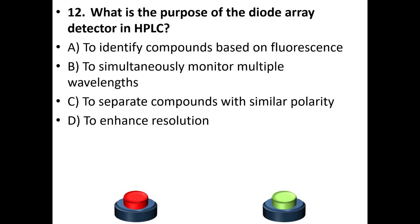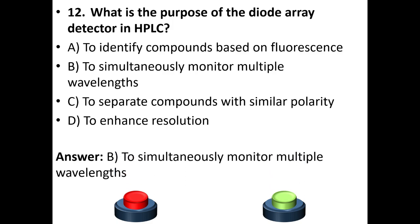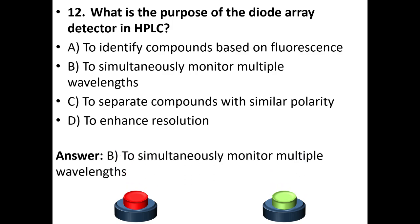Twelfth question: What is the purpose of the diode array detector (DAD) in HPLC? A. To identify compounds based on fluorescence. B. To simultaneously monitor multiple wavelengths. C. To separate compounds with similar polarity. D. To enhance resolution. Your answer is option B: To simultaneously monitor multiple wavelengths.